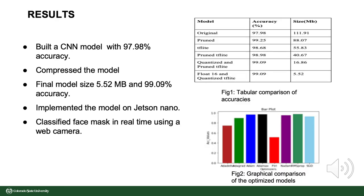During training, on comparison with other optimizers, RMSProp proved to be the best optimizer, achieving an accuracy of 97.98% with a model size of 111.91 MB. Five post-processing compression techniques were used to reduce model size and increase speed. The initial step is pruning, which increased accuracy up to 99.25% with a reduction in model size to 88.07 MB.